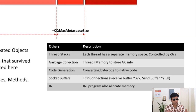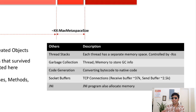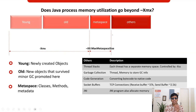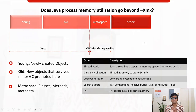Your application also has customers connecting to it — that needs connection objects and socket buffers. It also talks to multiple backend systems of record, requiring connections — all coming from the 'others' region. And if you use JNI (Java Native Interface) to talk with native applications, that memory also comes from 'others'. So when you set xmx, your Java application will actually consume more than that xmx limit.